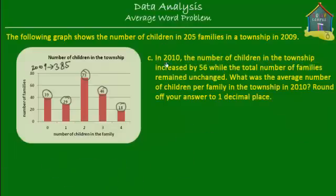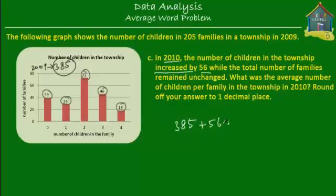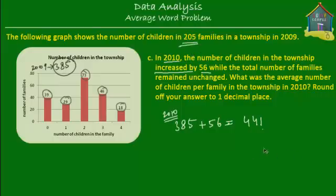Now the next question is: in 2010, the number of children in the township increased by 56, while the total number of families remained unchanged. So the number of children went up by 56. In 2009 there were 385 children, but now in 2010 there are 385 plus 56 children. 385 plus 56 equals 441. So in 2010 there are 441 children in the township, while the total number of families is still 205.